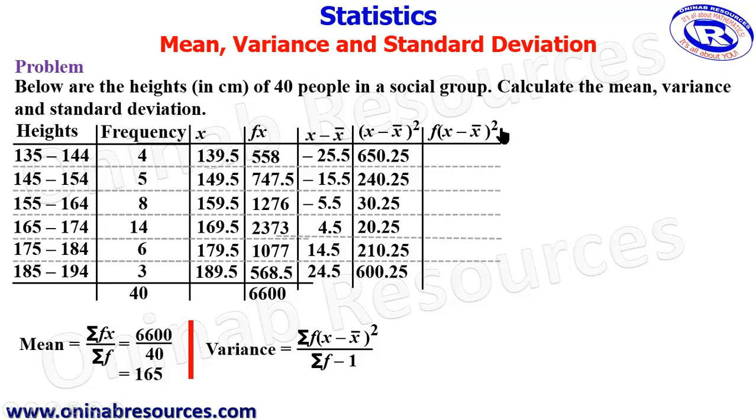Then the next thing is the frequency multiplying (x - x̄)² all squared. So this is this column multiplying this. So 4 times 650.25 gives 2601. 5 times 240.25 gives 1201.25. 8 multiplying 30.25 gives 242.